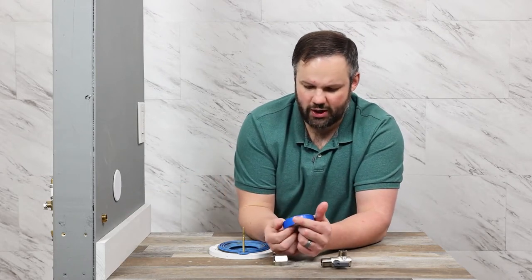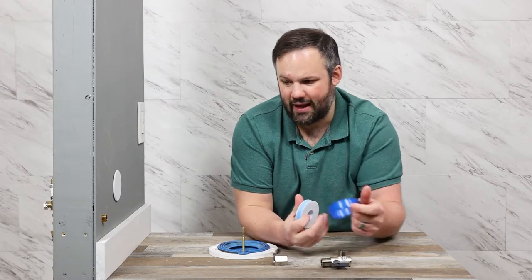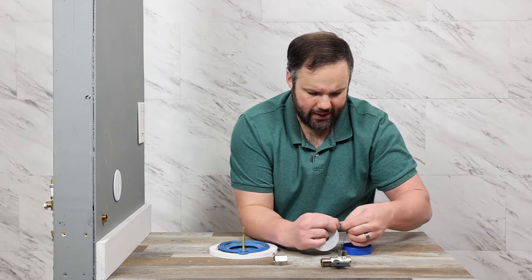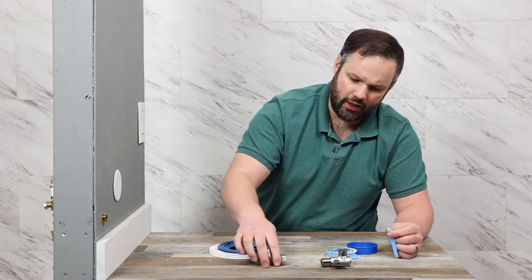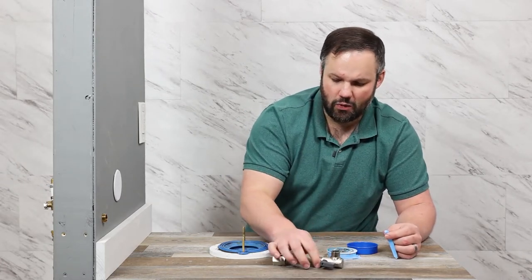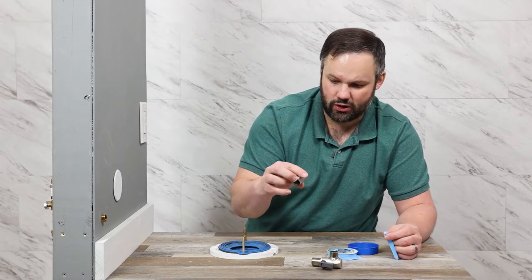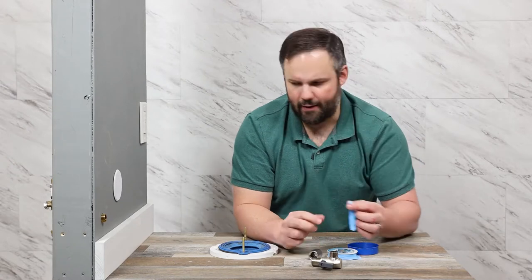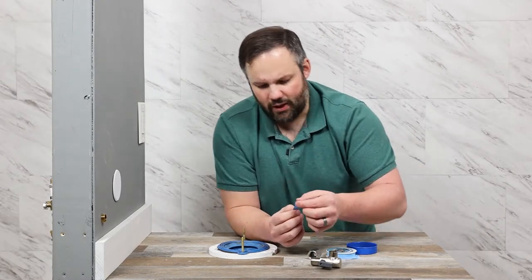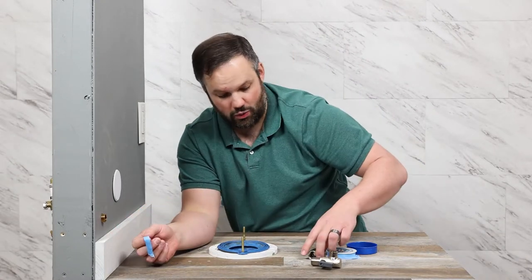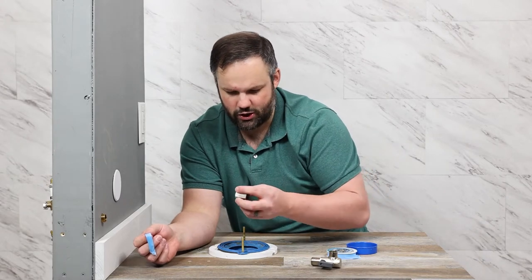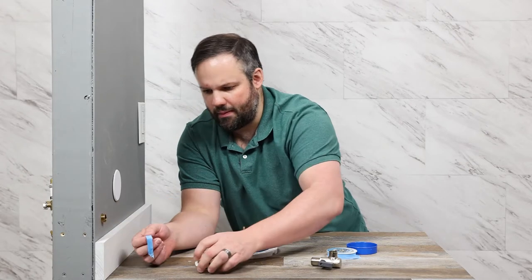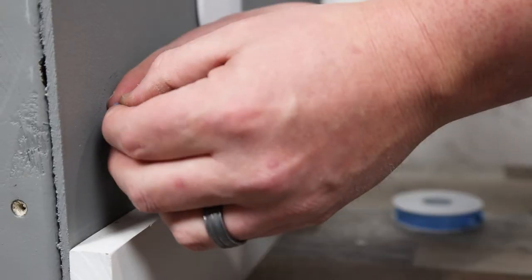Now, the instructions say to use plumber's tape on the wall side only, so we are going to do that. It is worth noting though that you have inside of this connector a couple of rubber O-rings, so it's going to be a pretty snug fit. We have already installed this once without any issues with leakage, so it's a pretty good setup. So we're going to put it on here, but before we do that, we're going to put on a little plumber's tape.